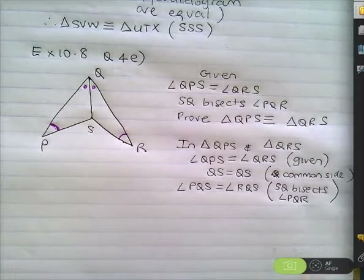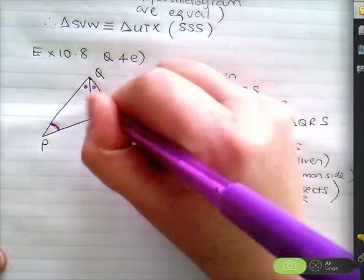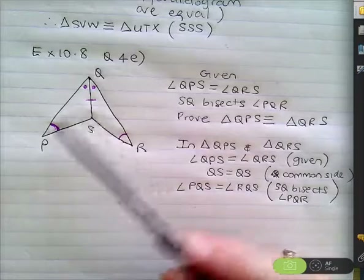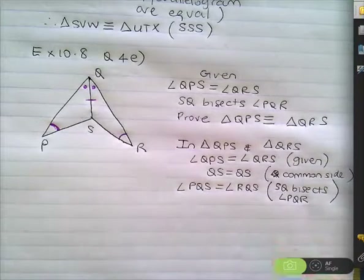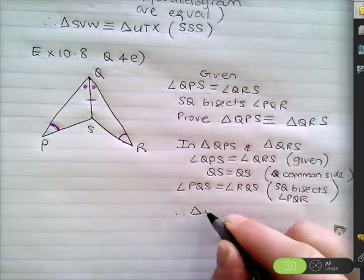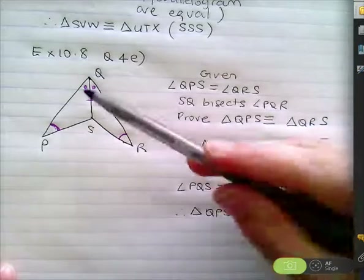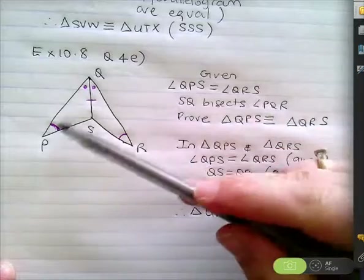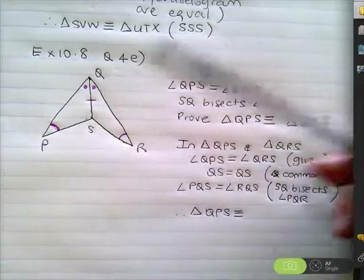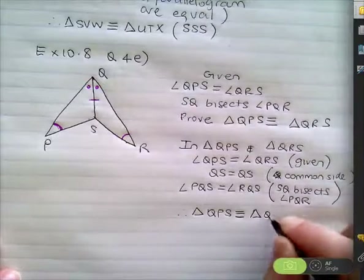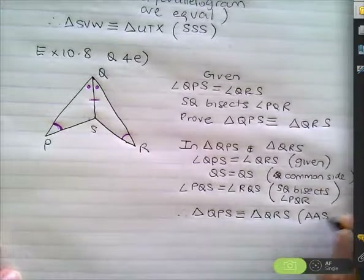Do we have enough? I've got three bits of information. You've got one angle, two angles, and one side. Therefore, triangle QPS is congruent to triangle QRS, and the reason is angle, angle, side — AAS.